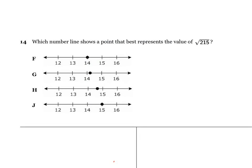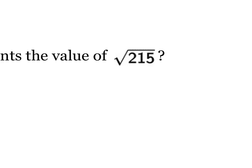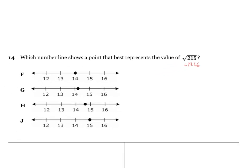Number 14 asks which number line shows a point best representing the square root of 215. In the calculator, this comes out to about 14.66. Think of it like money: 14.50 is halfway between 14 and 15, so 14.66 has to be a little over halfway. Only options G and H show the point between 14 and 15, and since it has to be over halfway, that's enough to get your answer.